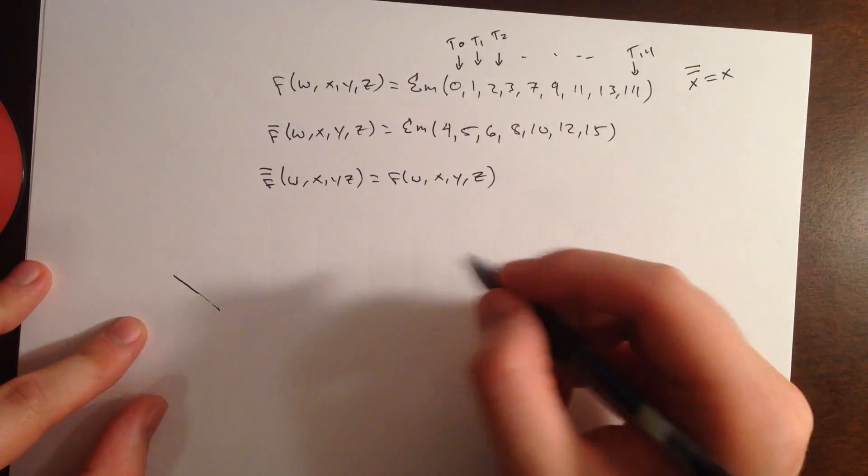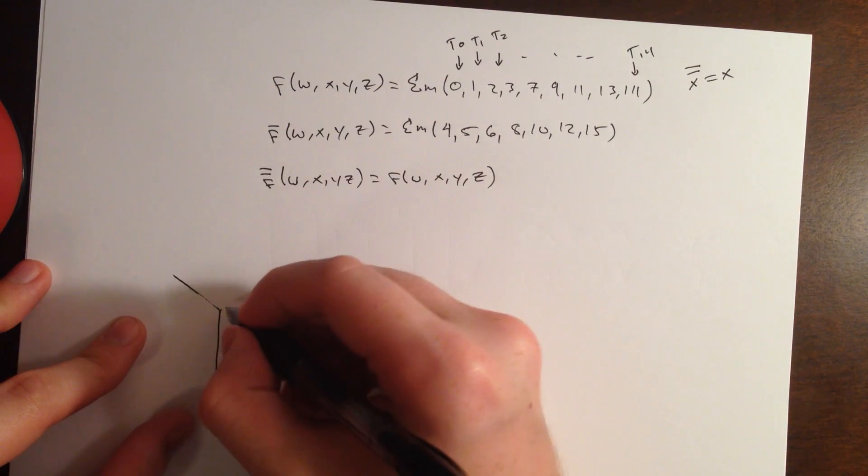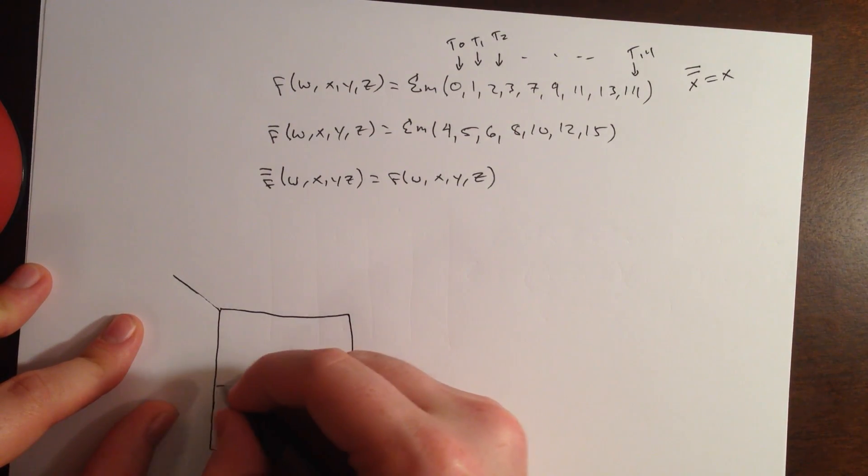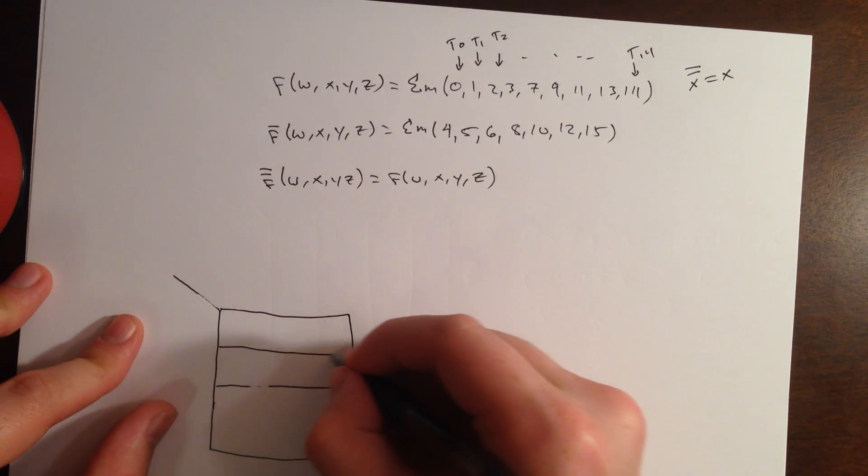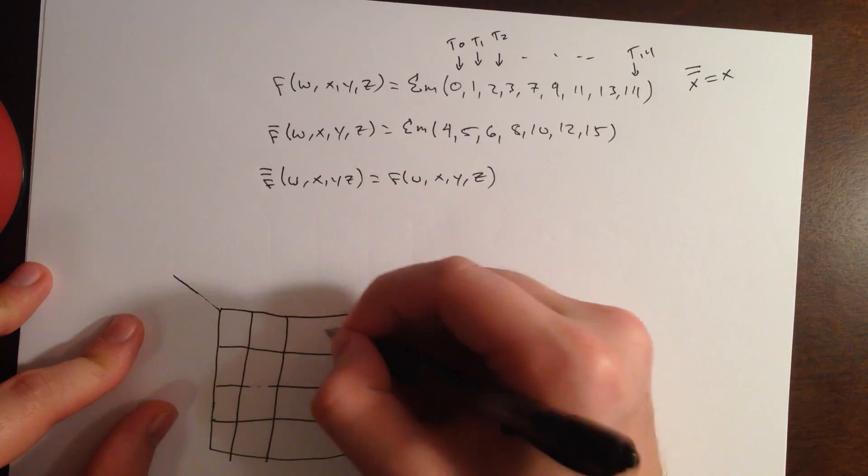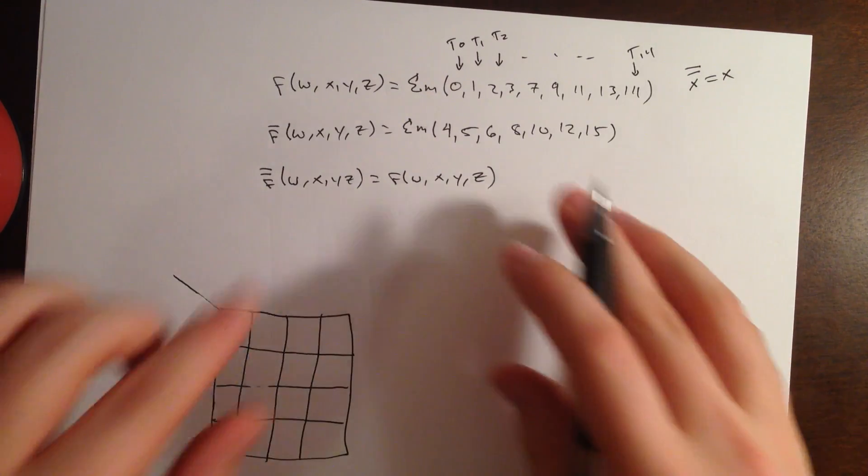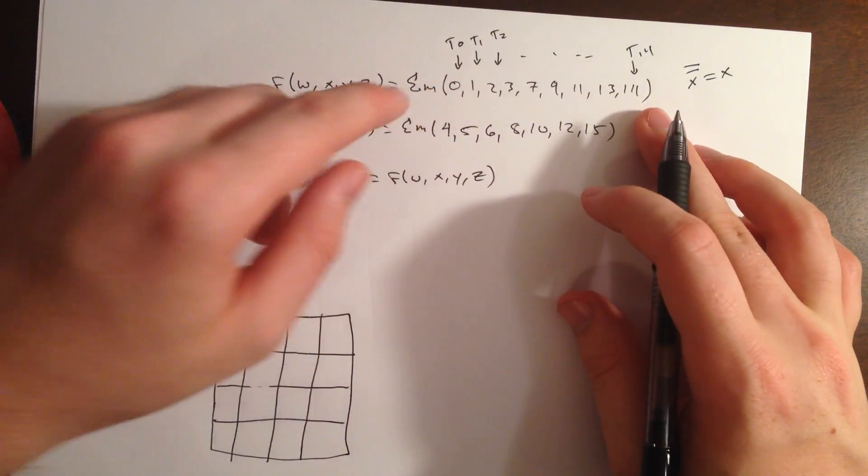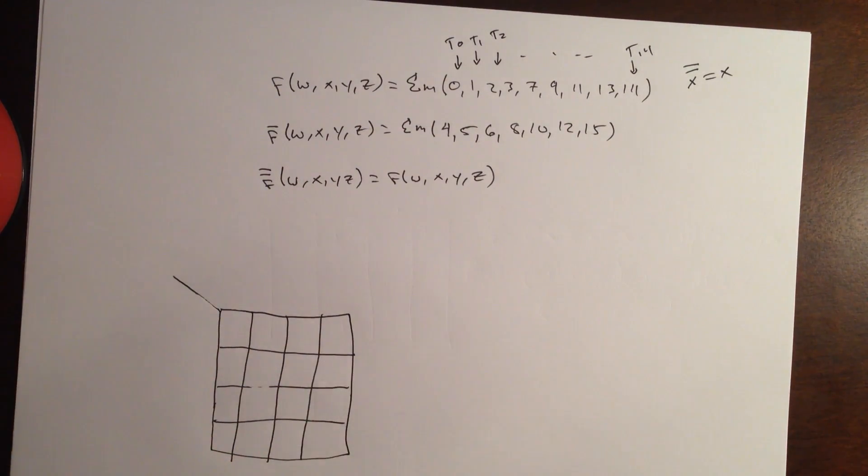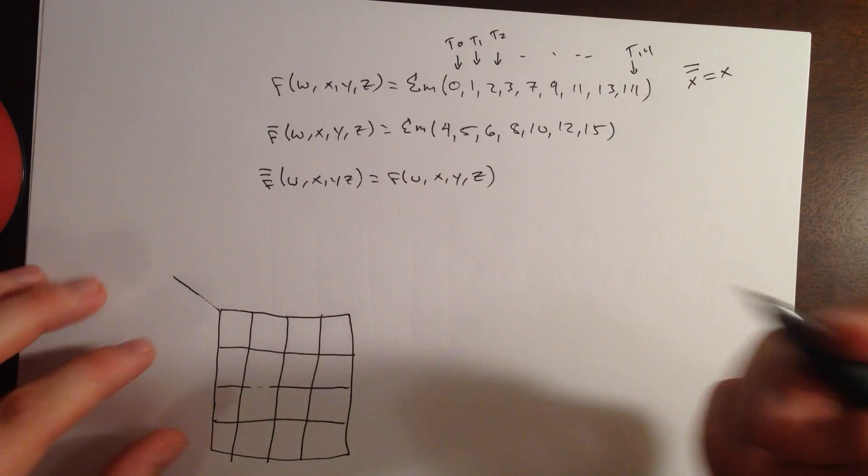So, let's go ahead and make the minimum SOP expression for f, and after that, we'll make the minimum SOP expression for f', and then we'll invert f' to get our minimum POS expression. And the invert of f' is just f. So, let's start with the 4-variable kmap for f. I'll go ahead and draw it right here.